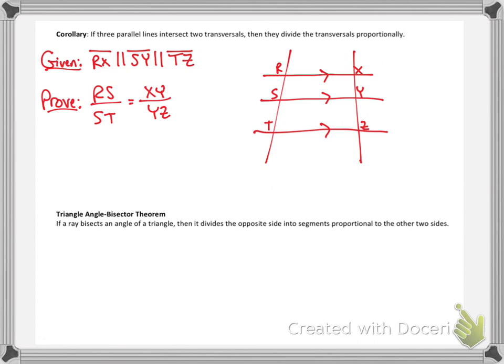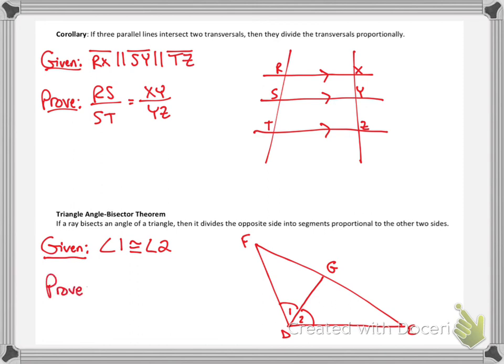Last one here where you can kind of cut things apart and get some proportional sides. It's what we call the triangle angle bisector theorem. If you have a ray that bisects an angle of a triangle, it divides the opposite side and the segments proportional to the other two sides. Here's a picture of what I'm talking about. Let's say you have triangle DEF, and you've got yourself an angle bisector in DG. As you can see here, I've cut apart angle D into two smaller angles, angle 1 and angle 2, that are congruent to one another. As long as you know that angle 1 is congruent to angle 2 in this situation, where clearly you can tell what's being bisected, that is enough to tell you that GE over GF is the same thing as DE over DF.